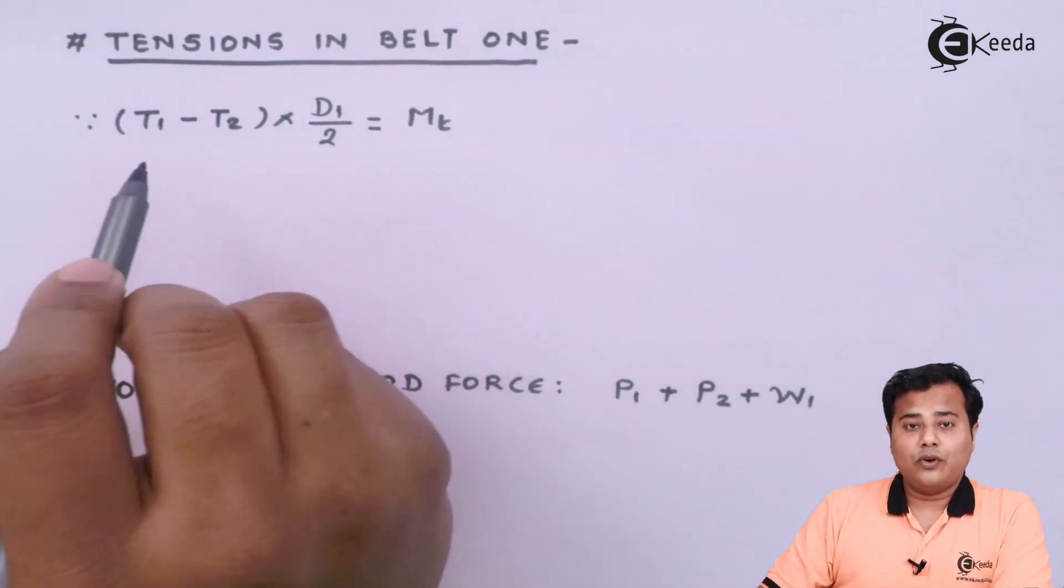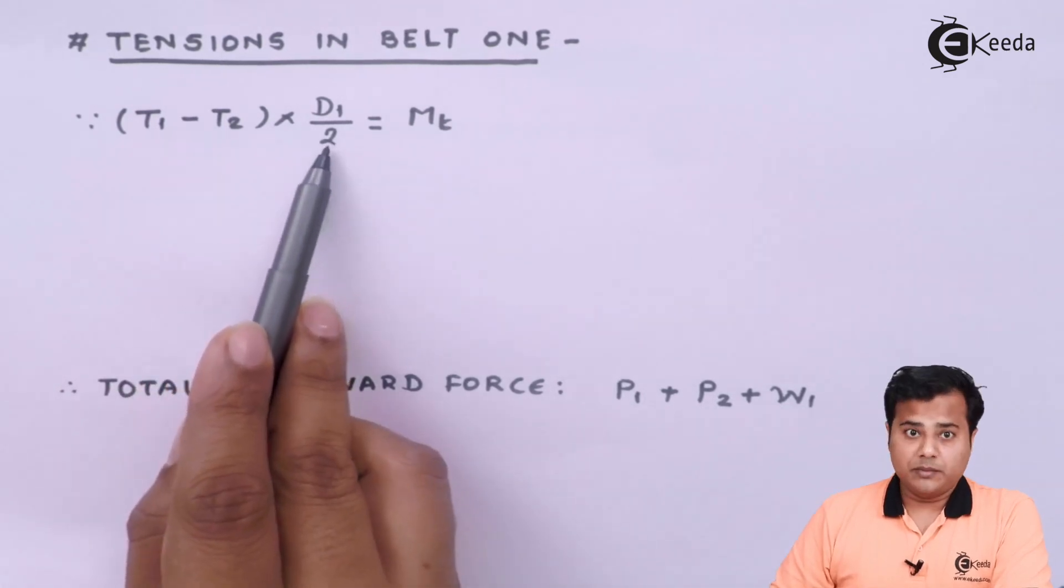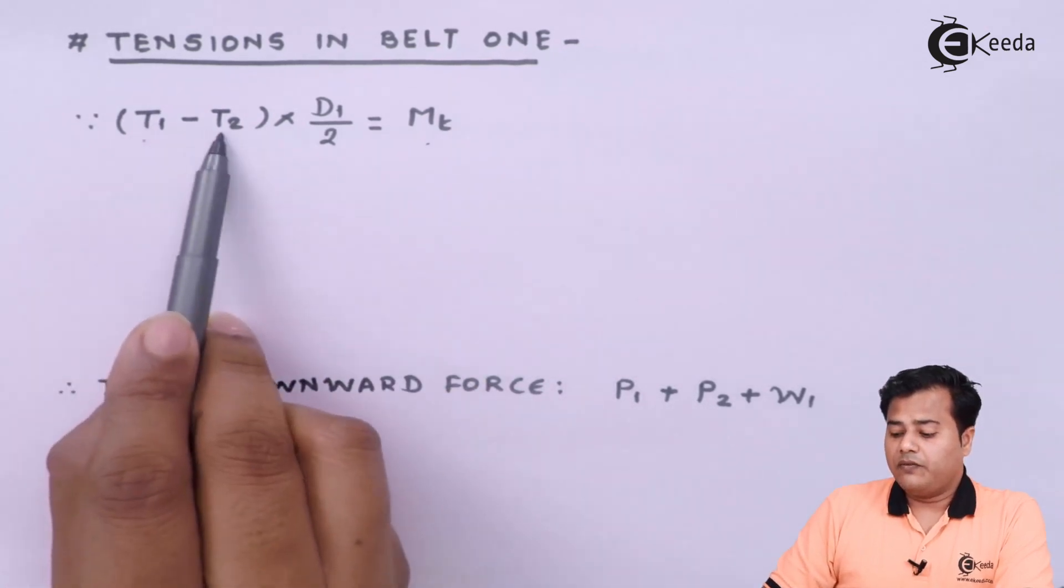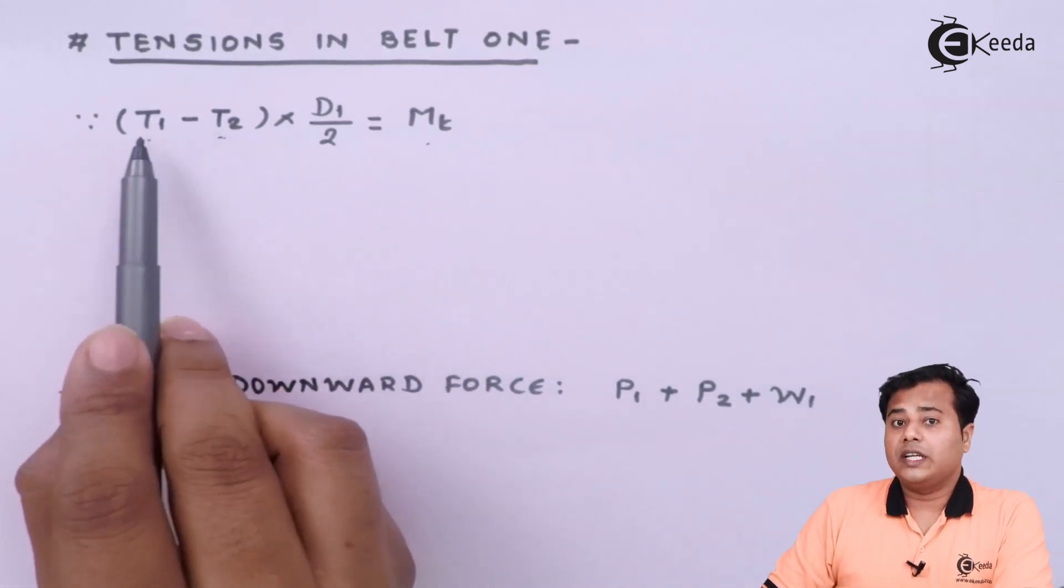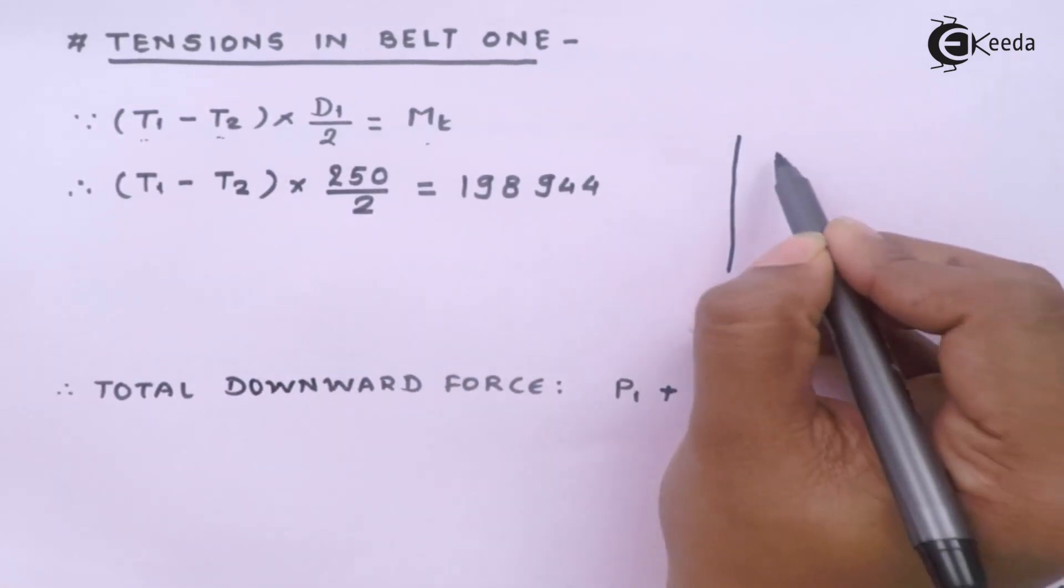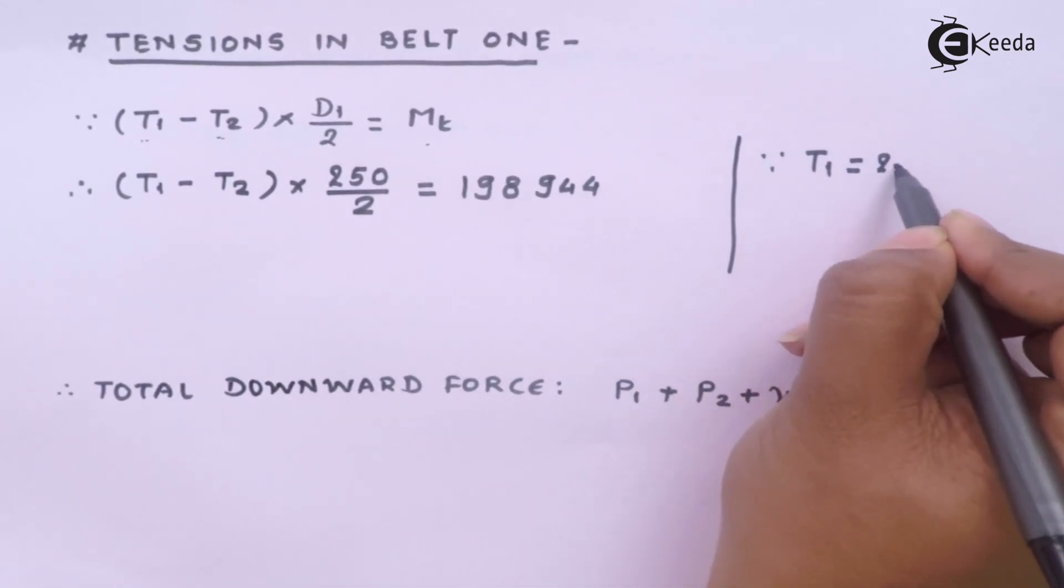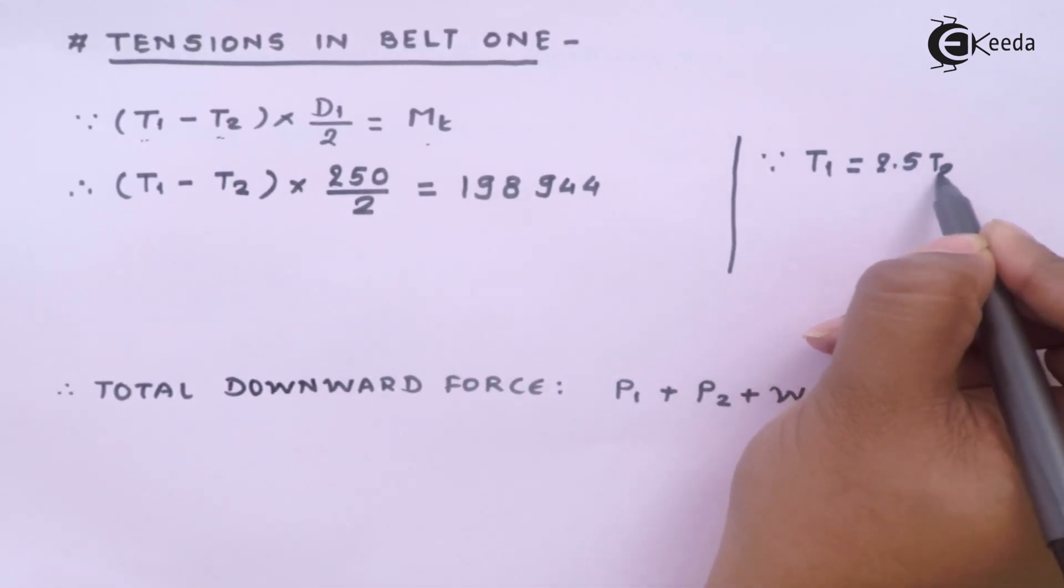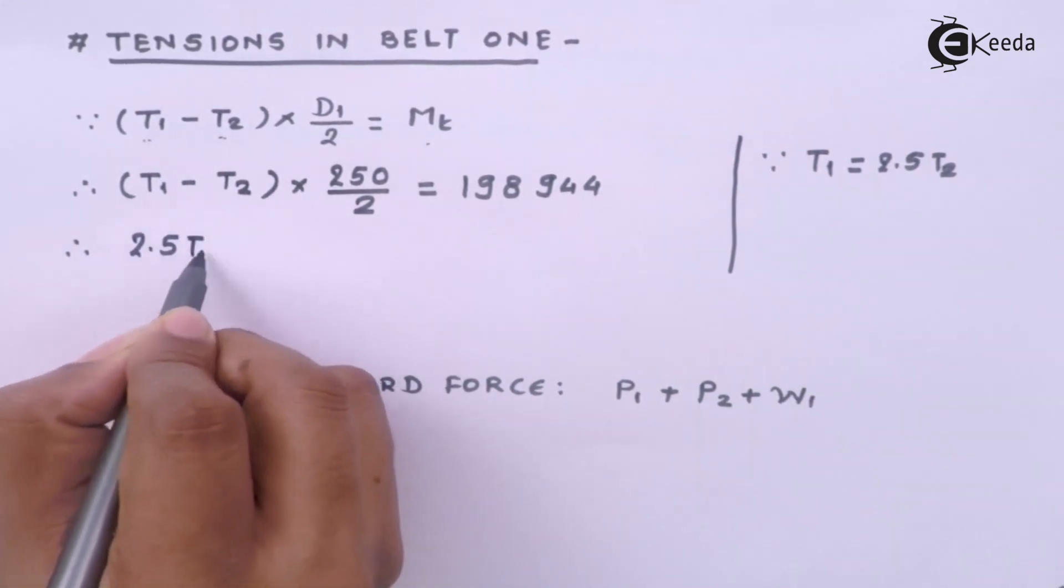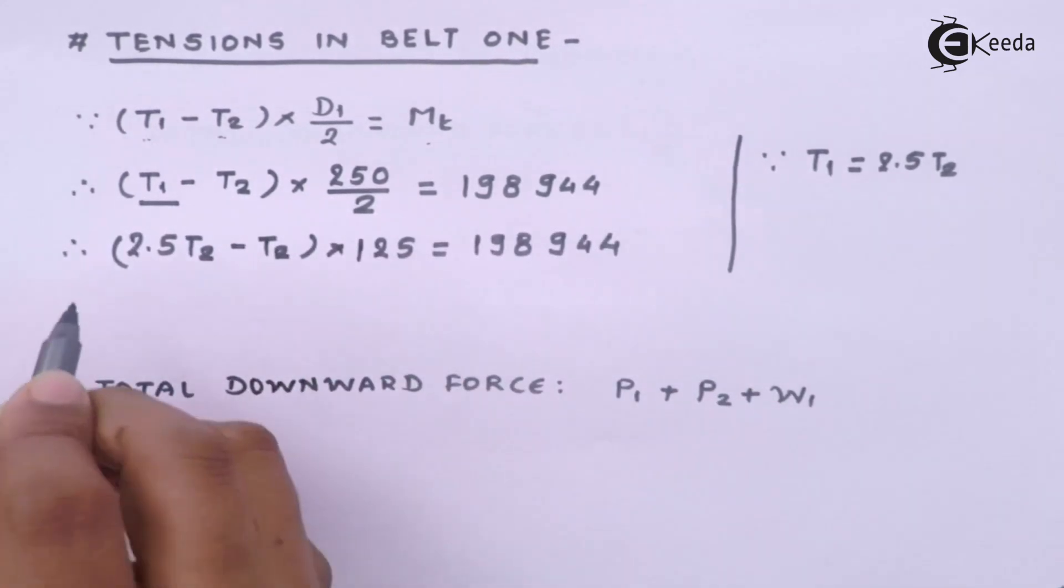It's a very well known formula that the difference between the tensions into the radius, that is diameter by 2, becomes the torque transmitted. We have been given torque transmitted and we know the tensions or the ratio between them. We know that tension 1 is exactly equal to 2.5 times the tension 2.